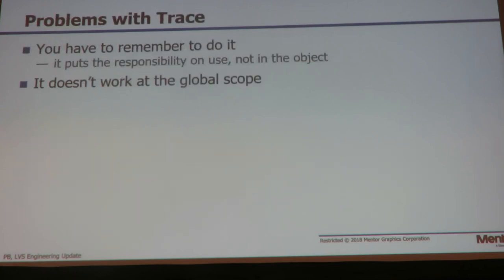You have to remember to put the trace on — you can't just create an object and use it. You have to know there's a file to be closed. So the responsibility is on the user to close the file. And if you're trying to create a file object or have other hidden resources in your object that have to be closed, it doesn't really work.